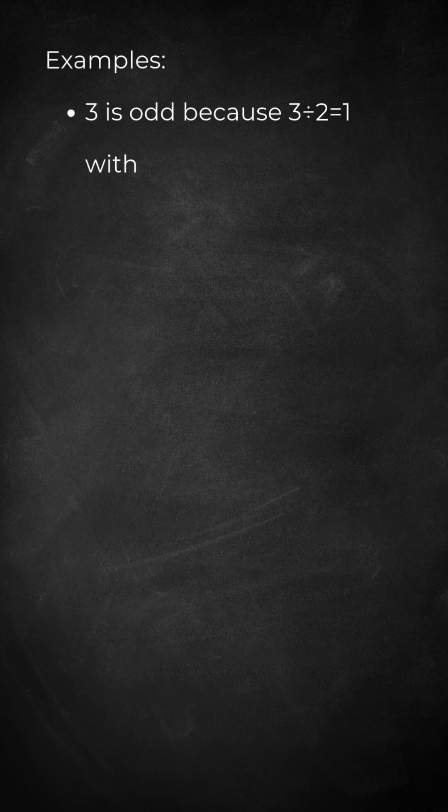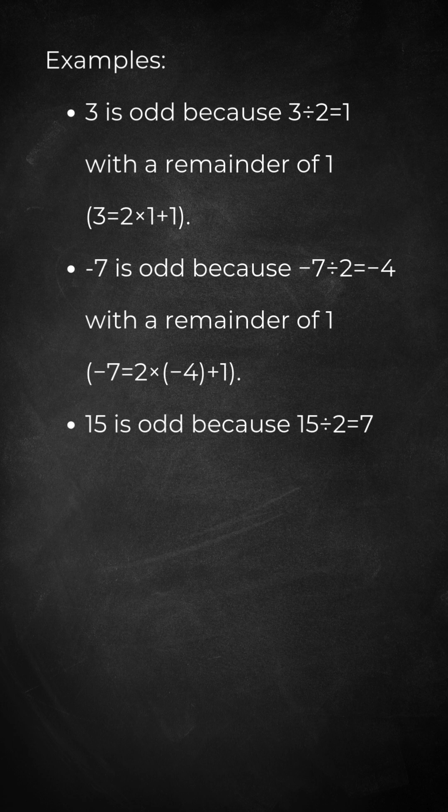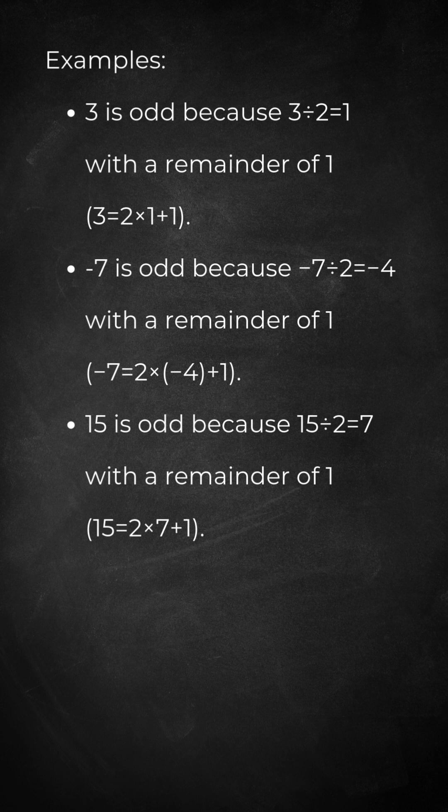Examples. 3 is odd because 3 divided by 2 equals 1 with a remainder of 1. 3 equals 2 times 1 plus 1. Minus 7 is odd because minus 7 divided by 2 equals minus 4 with a remainder of 1. Minus 7 equals 2 times minus 4 plus 1.